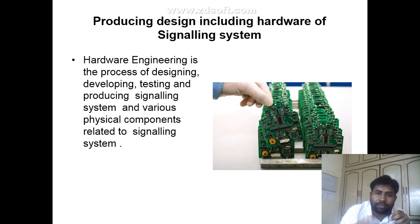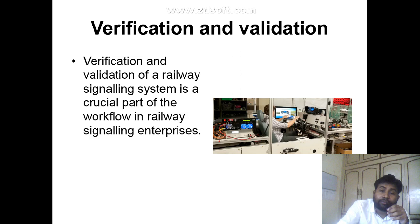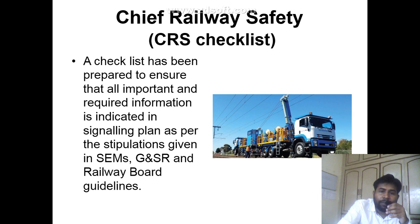Next is producing design including hardware of signaling system. Hardware engineering is the process of designing, developing, testing and producing the signaling system and various physical components related to it. Verification and validation is also part of designing, and is a critical part of the workflow in railway signaling enterprises.